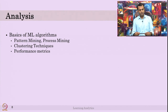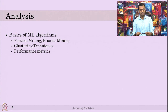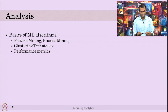We also talked about basics of machine learning algorithms: pattern mining, process mining, clustering techniques, performance metrics, some regression techniques, Naive Bayes, and decision trees. Revisit what is pattern mining and process mining — most of you might know clustering and regression, but process mining and pattern mining might be new; check them again and check for association mining also.